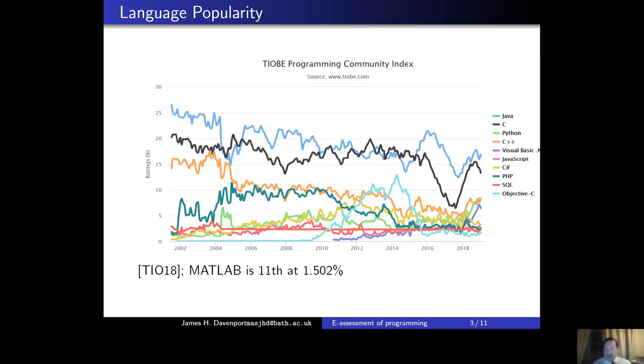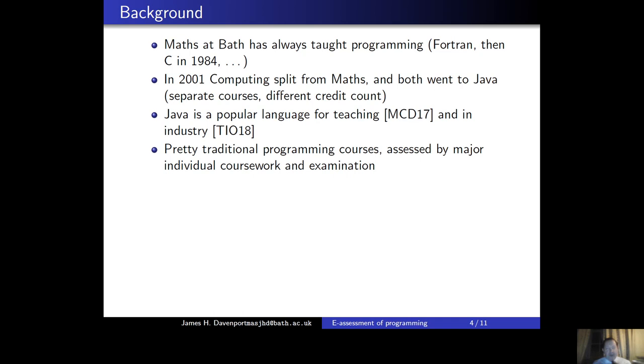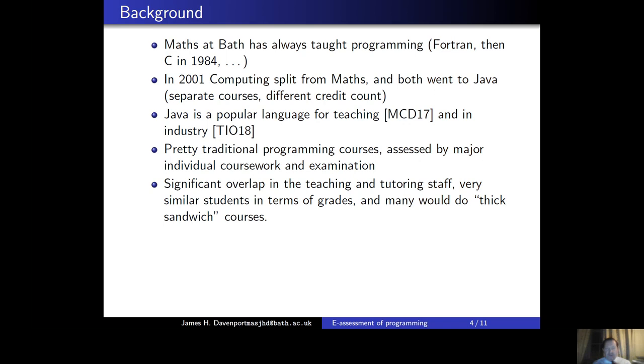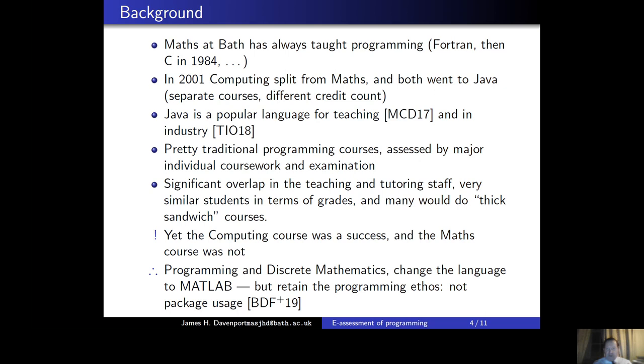There are pre-traditional programming courses assessed by major courseworks and examinations. The teaching staff and the tutoring staff has different overlap. They're very similar students in terms of grades. Many of them went on in both cases to do thick sandwich courses. Nevertheless, the computing course was a success and the maths course wasn't. Essentially, the answer to that was that the maths students were there to do maths, not programming. So our solution back in 2009 was to change the maths course. It was programming and discrete mathematics. We changed the language to MATLAB, but it was a programming course. It wasn't a how to drive MATLAB packages course. And that course described the paper we wrote last year. So I'm not going to talk more about that. I'm going to talk about the assessment.